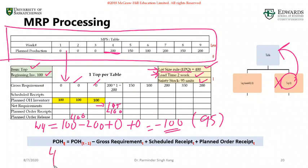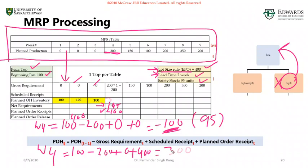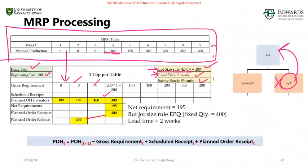Now that we know the planned order receipt, we update the planned on-hand for week four: planned on-hand from week three (100) minus gross requirement (200) plus scheduled receipts (0) plus planned order receipt (400) equals 300 units. Don't leave it as minus 100 — that was only the preliminary calculation. So we now have 300 units on hand, which is above the safety stock.